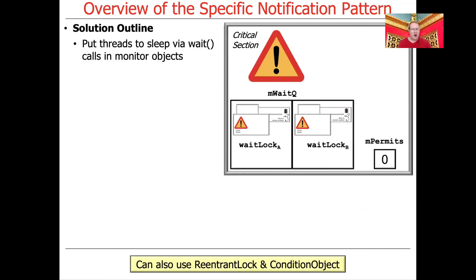Here's a quick overview of the solution, then we're going to dive into the solution in more detail. Basically the way this works is we're going to have threads that will go to sleep by calling wait on monitor objects. That'll be for the undergrad version of assignment 3B. By the way, the grad student version uses a ReentrantLock and a condition object to get the same effect.